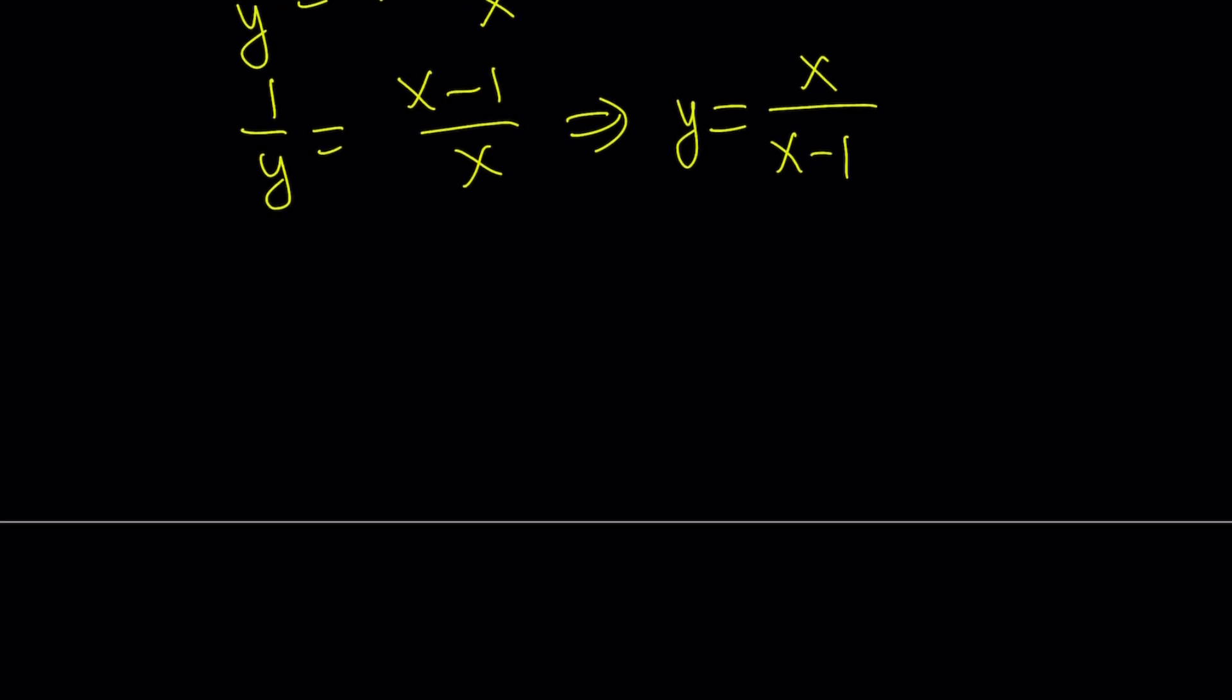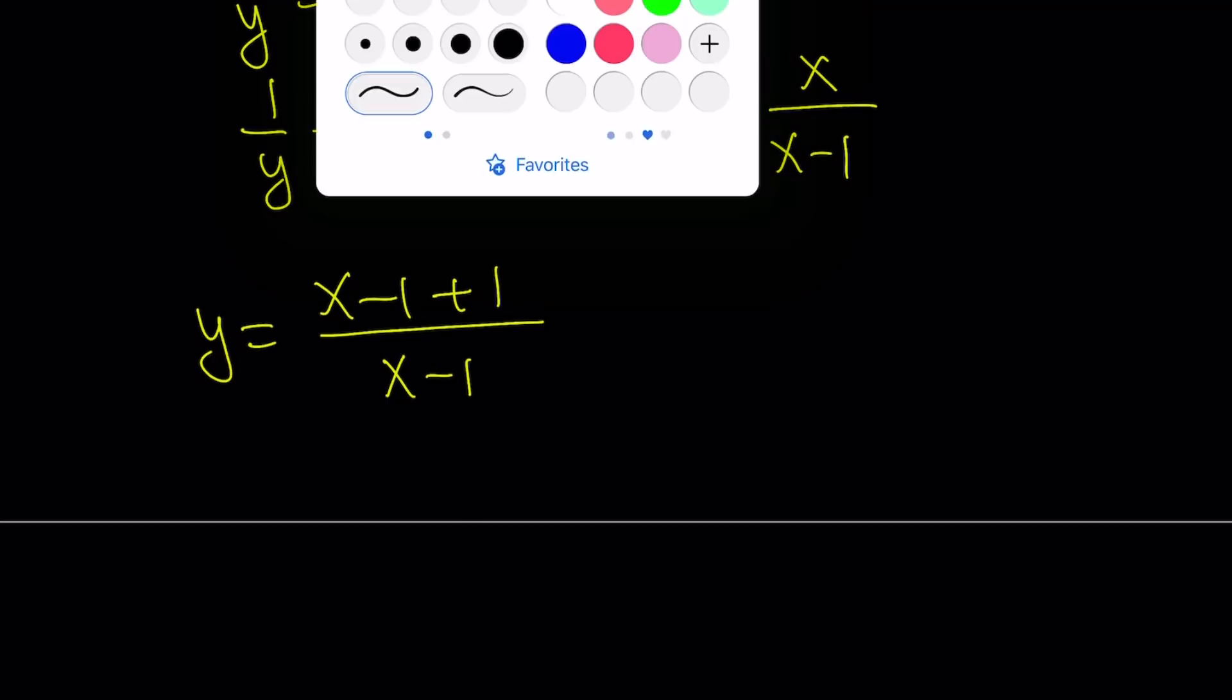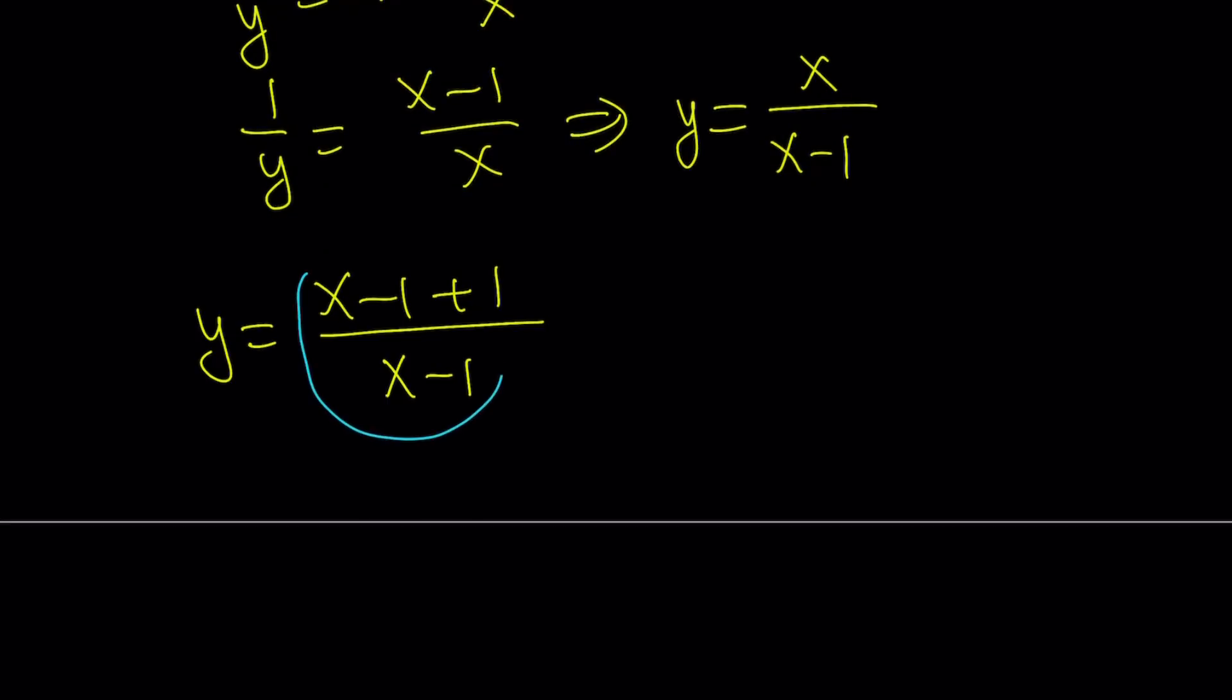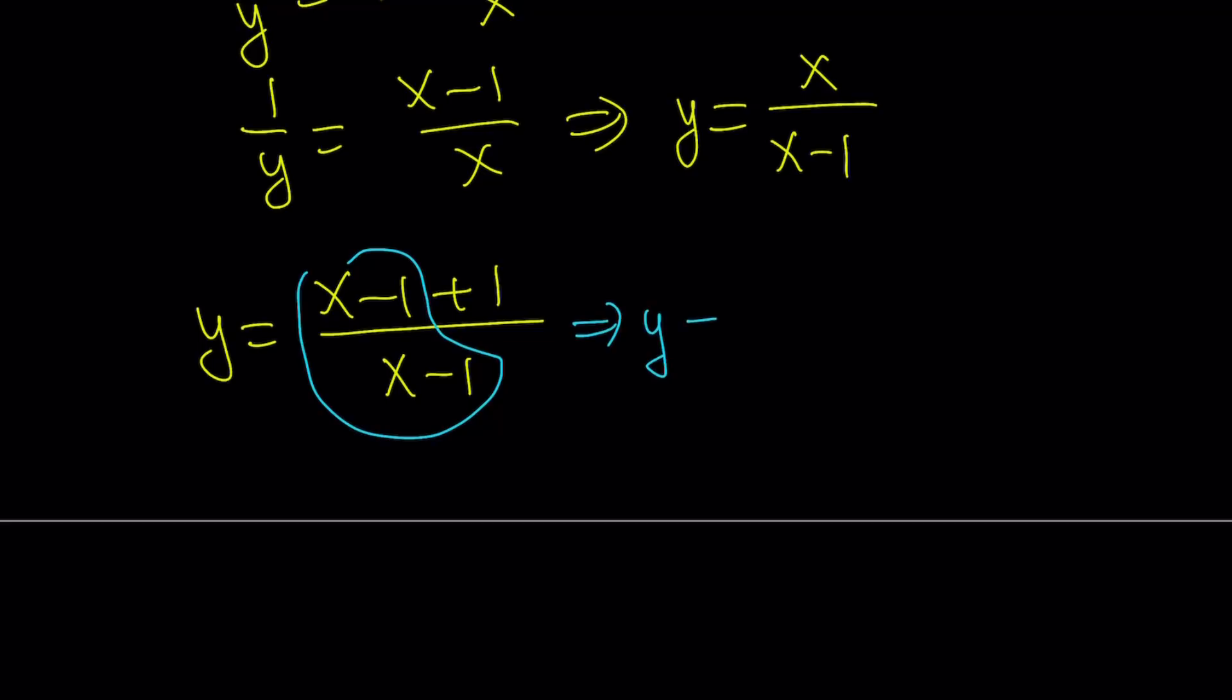Now, I want to manipulate the numerator in such a way that I can make it look like the denominator. So it's kind of like x minus 1 plus 1 is equivalent to x. And now this allows me to separate this into two fractions, kind of like unadd. So from here, y becomes 1 plus 1 over x minus 1.